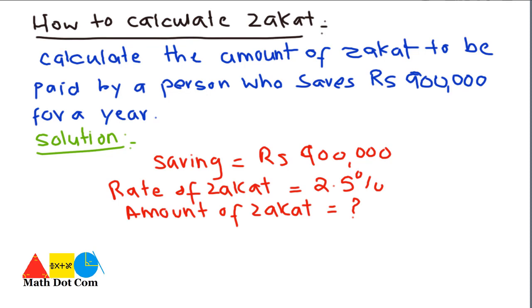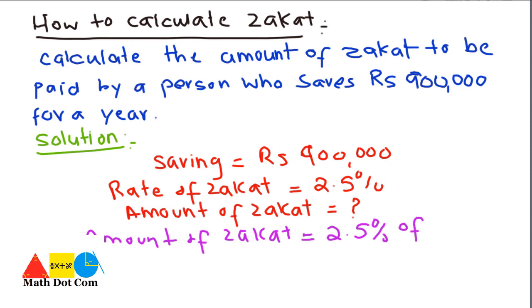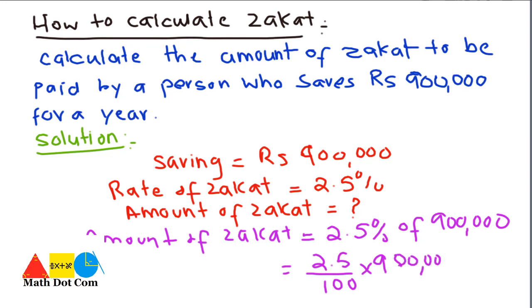The formula is: amount of zakat equals 2.5% of the wealth. The percentage concept applies whenever you want to find a part of some amount. Amount of zakat is equal to 2.5% of 900,000. The percentage sign is converted into 1 over 100, so we write 2.5 over 100 multiplied by 900,000. We remove the decimal point from 2.5, write 10 in the denominator, and cancel the zeros to get 900 multiplied by 25.